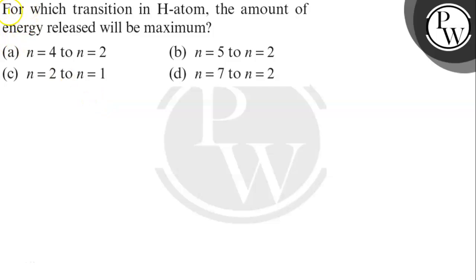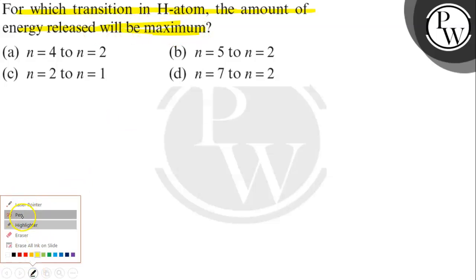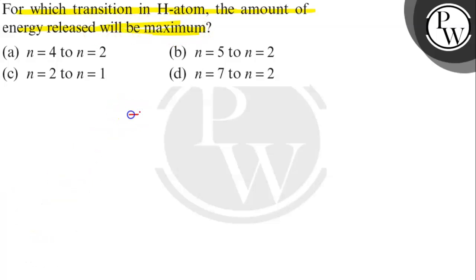Hello, let's read the question. The question is: for which transition of the H atom will the amount of energy released be maximum? So from which energy state? The atom used here is the H atom.